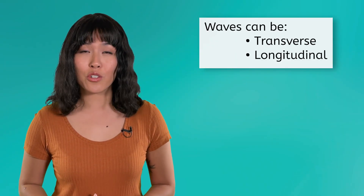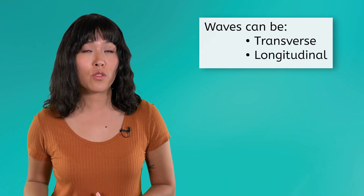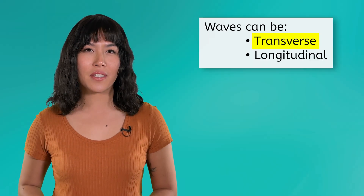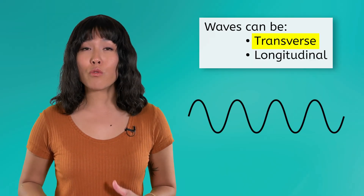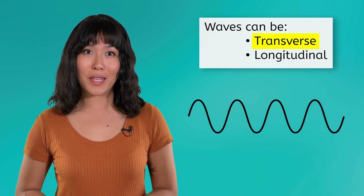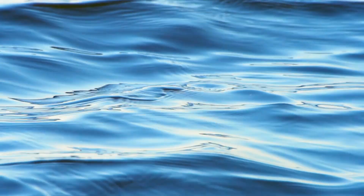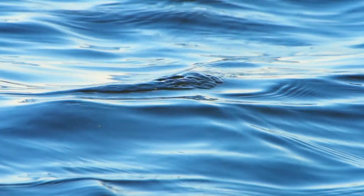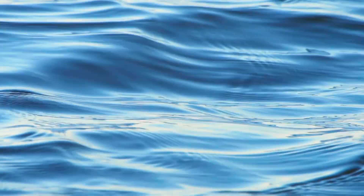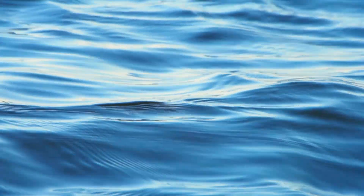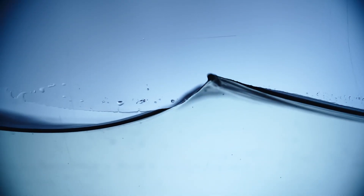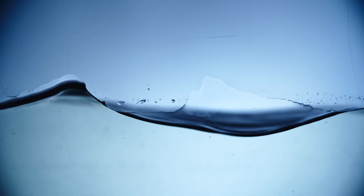Waves are generally categorized as either transverse or longitudinal. We'll start with transverse waves, because these are the kind of waves you are probably most familiar with. A good example of transverse waves are water waves, like the ones I was standing in front of earlier. Notice that from this angle, it looks like the water is moving toward you. But if we were to look at the water from the side, it looks like it is moving up and down.